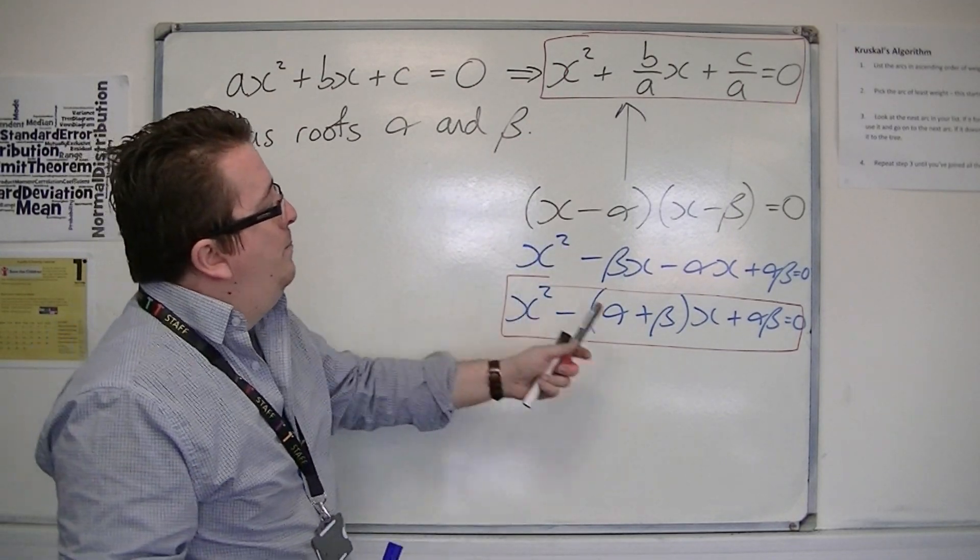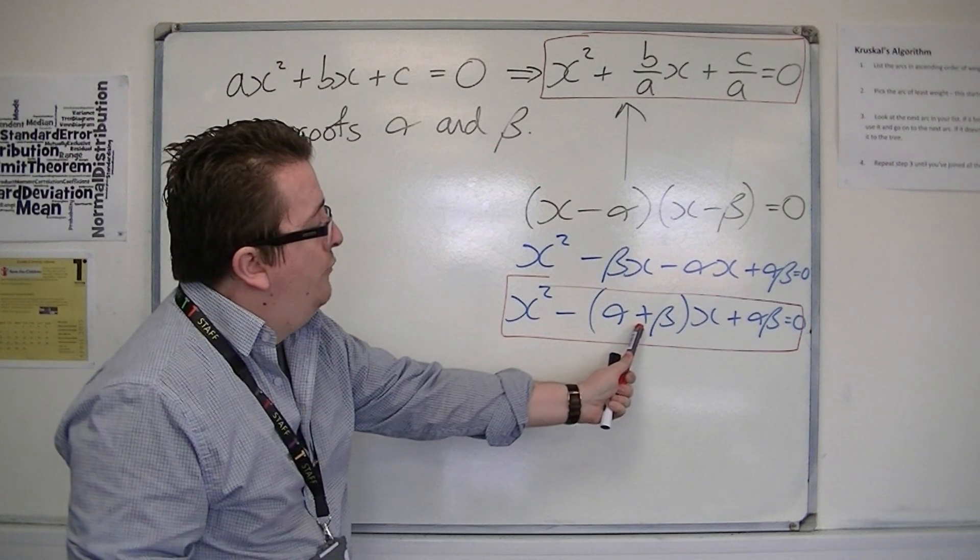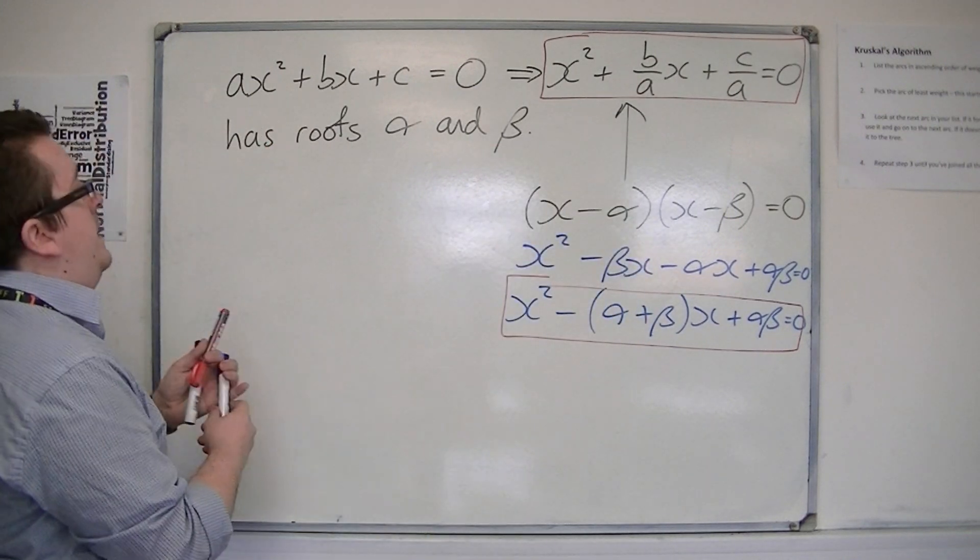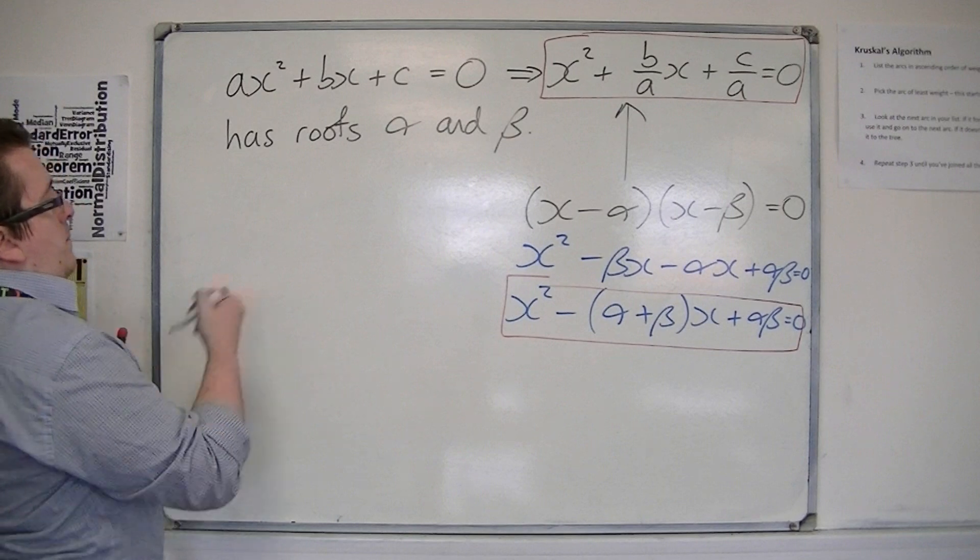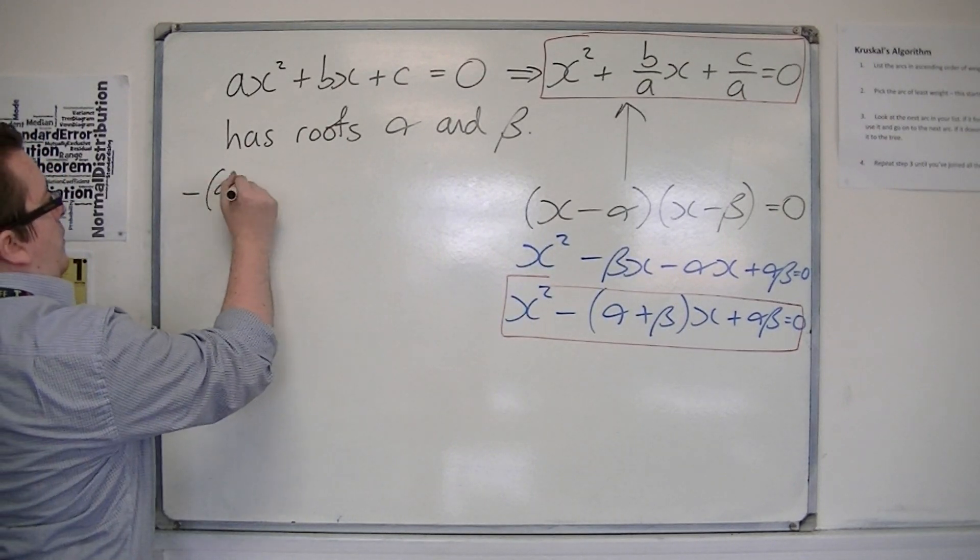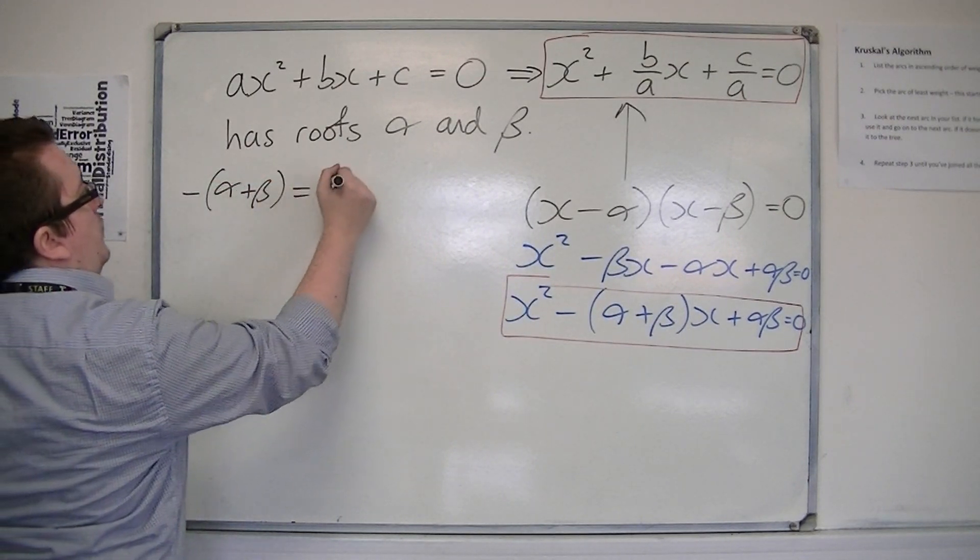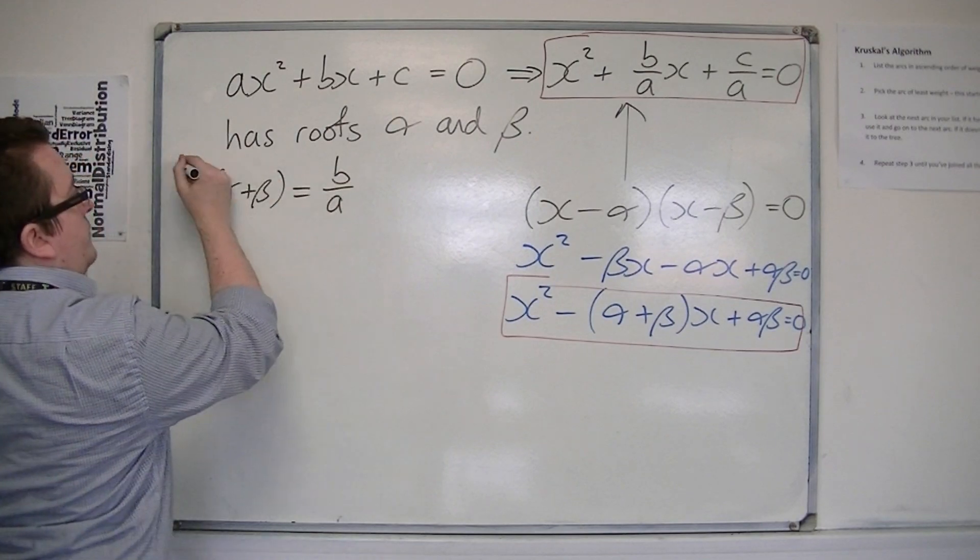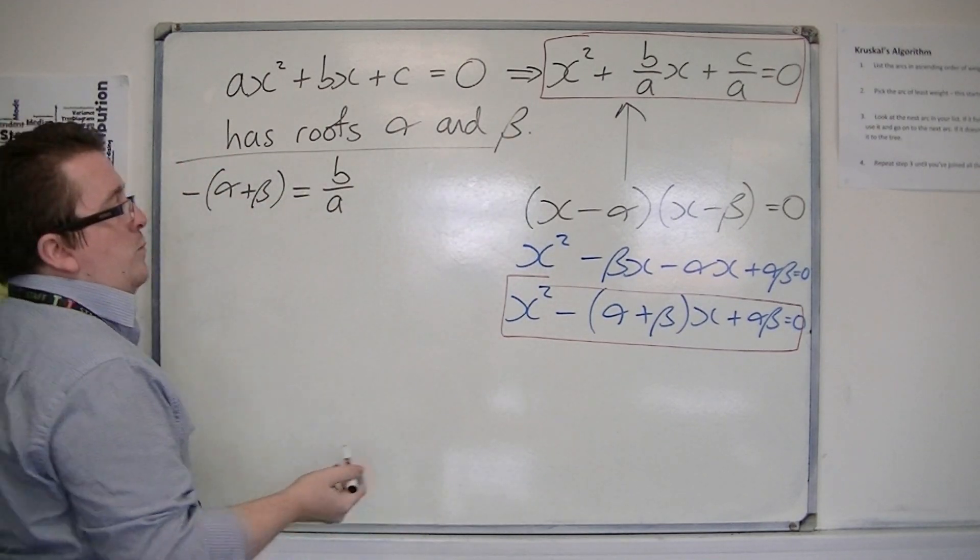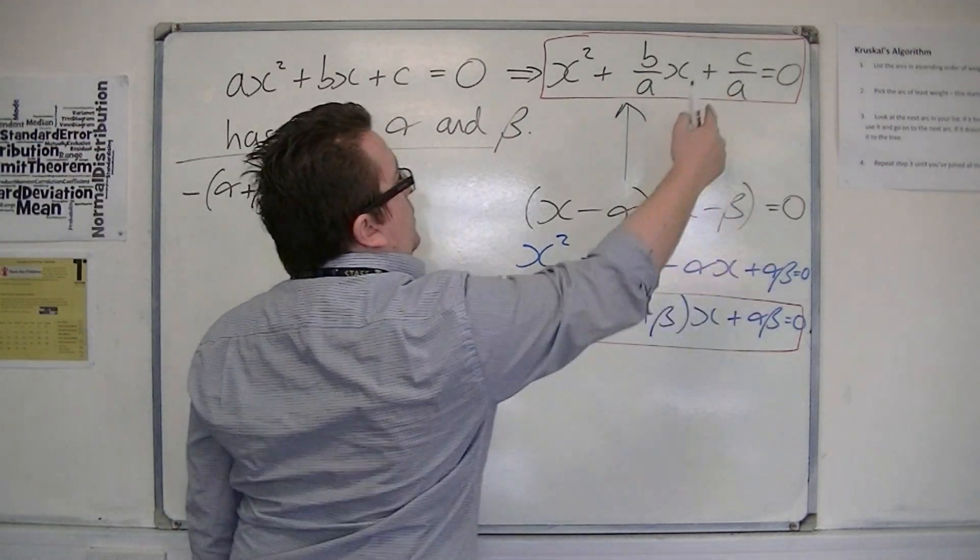but we've got -(α + β) is equal to b/a, so -(α + β) is equal to b/a, and we've got αβ is equal to c/a.